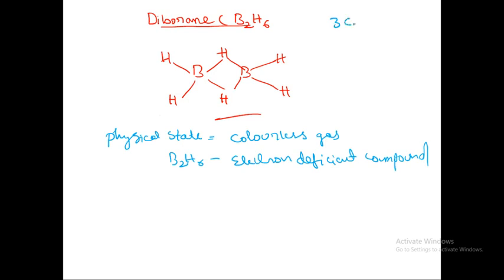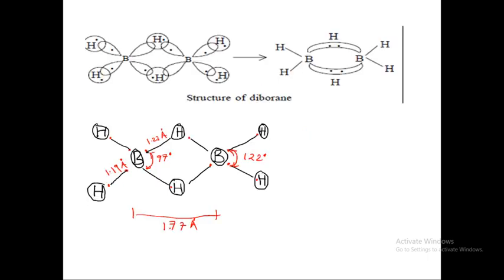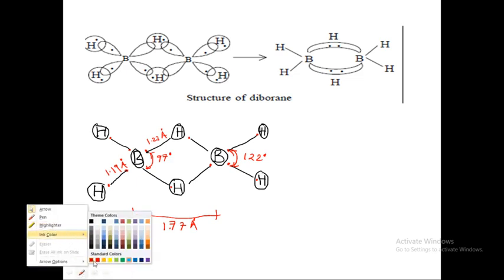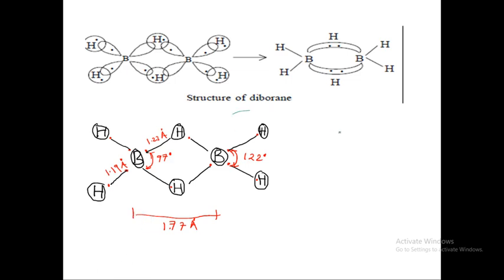Most importantly, in this type of bonding you will see the three-center two-electron bonding, and sometimes it is also called a banana bond. We will try to study this in the structure. If you look at the structure here, you will see 12 valence electrons.